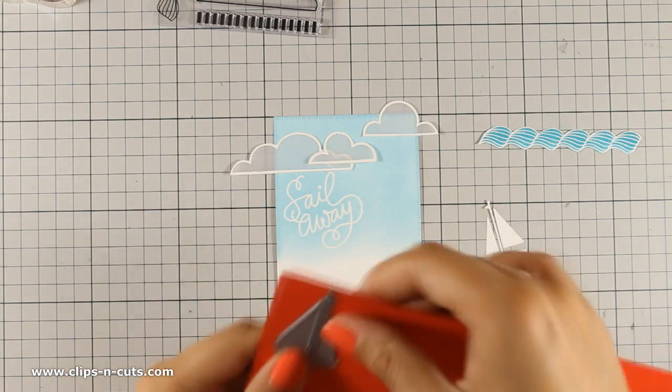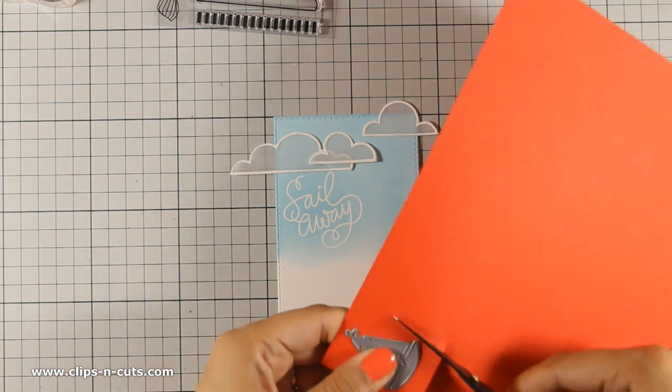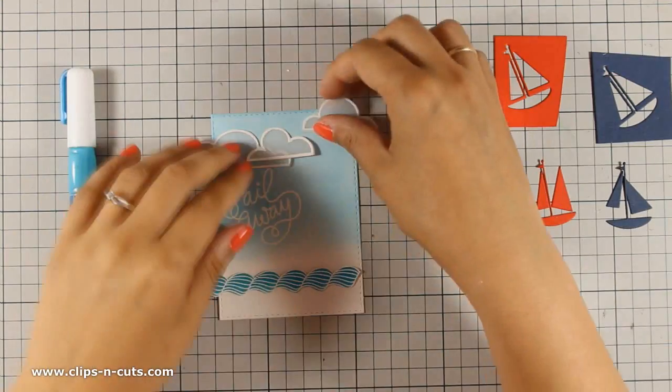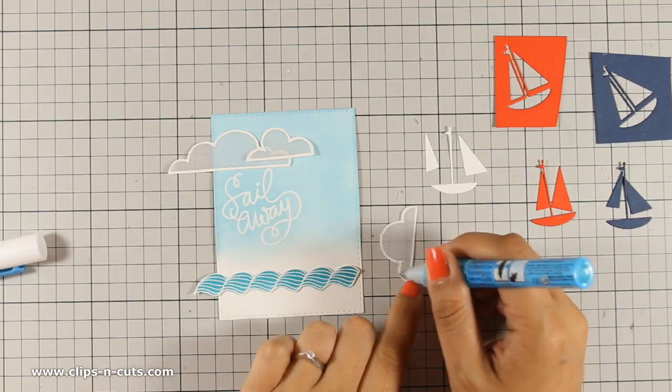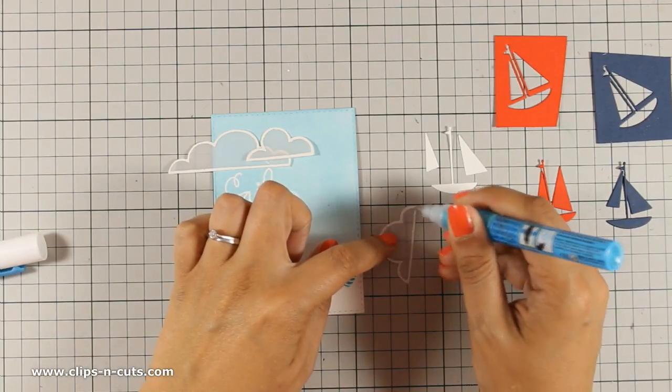So I am going to use the sailboat die that was in the kit and I have cut out this sailboat three times once from white from red and from blue cardstock that was included in the kit.